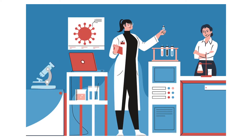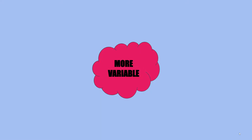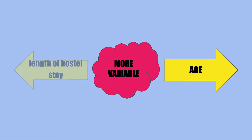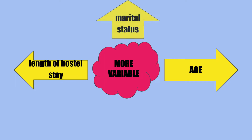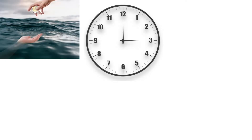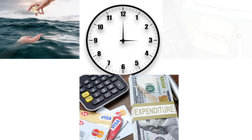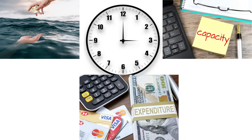Some researchers may work to achieve all the above objectives; some may take more variables for such a study, like age, length of hostel stay, marital status, socio-economic status, etc. In this way, objectives are fixed according to the need, time, expenditure, and capacity of the researcher.